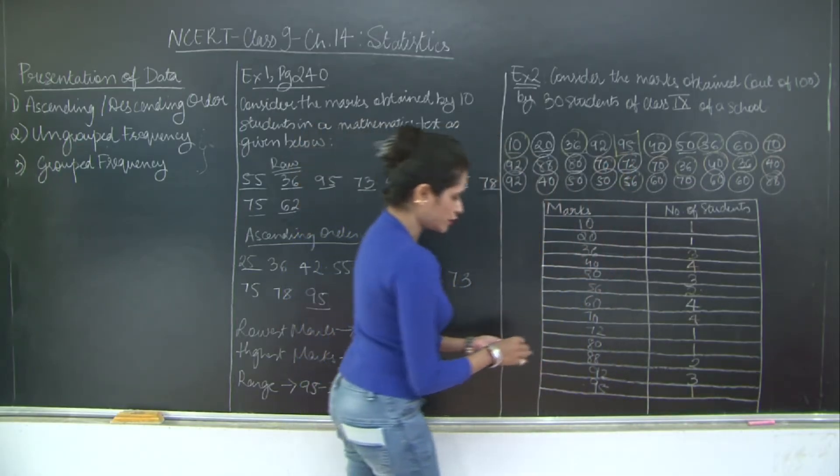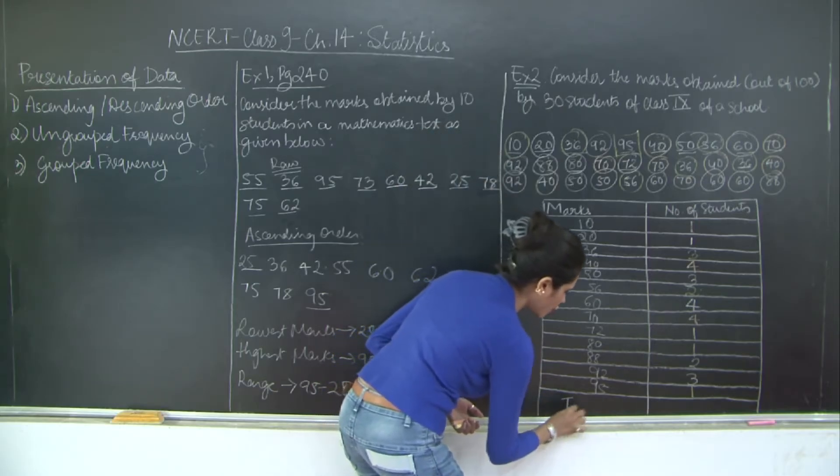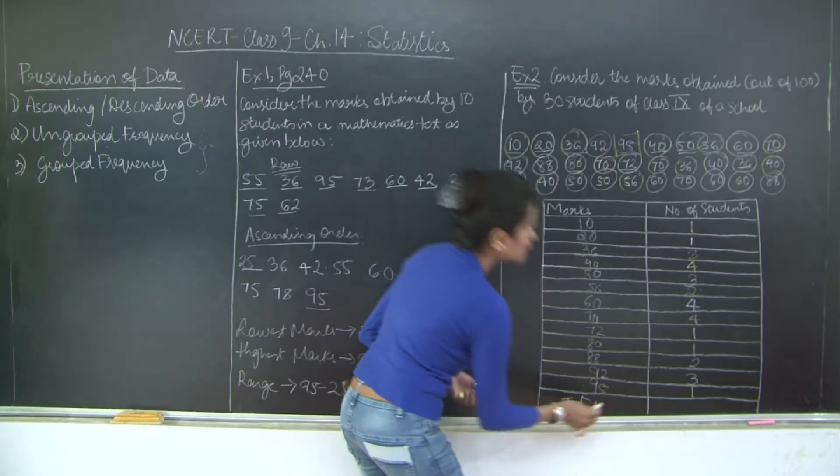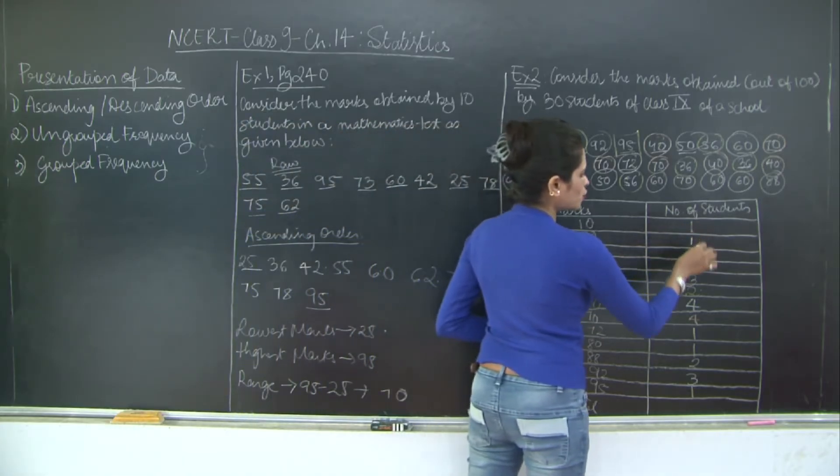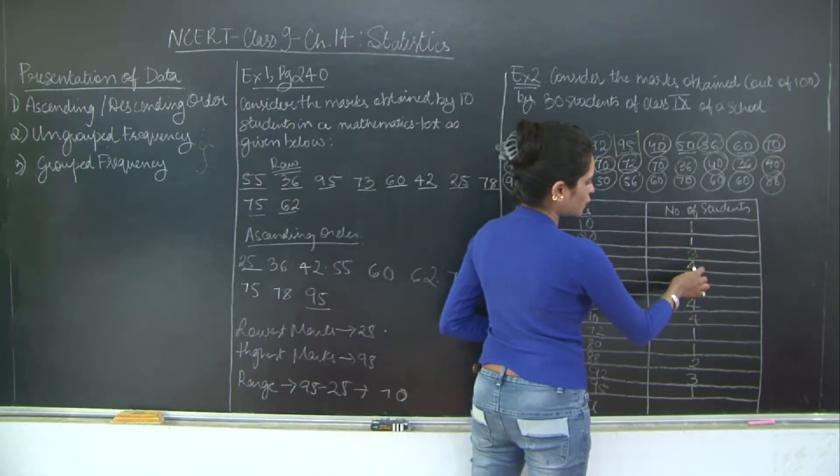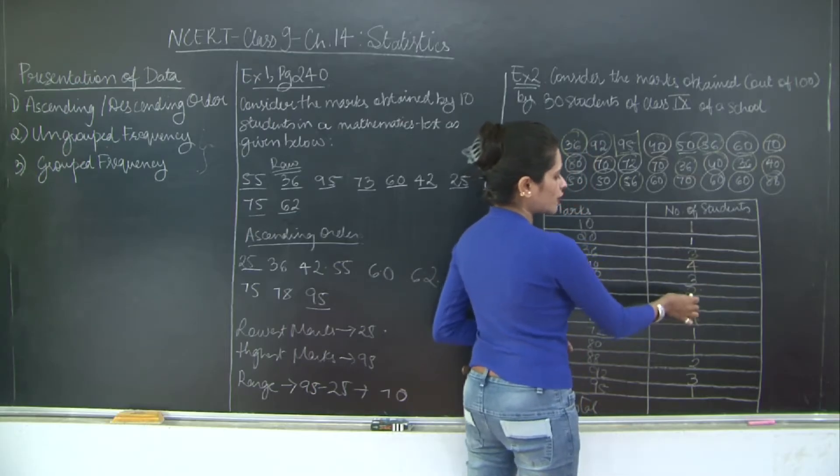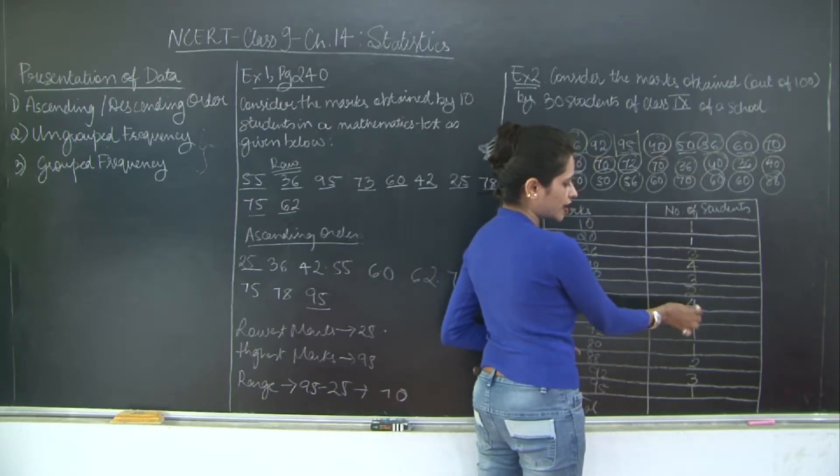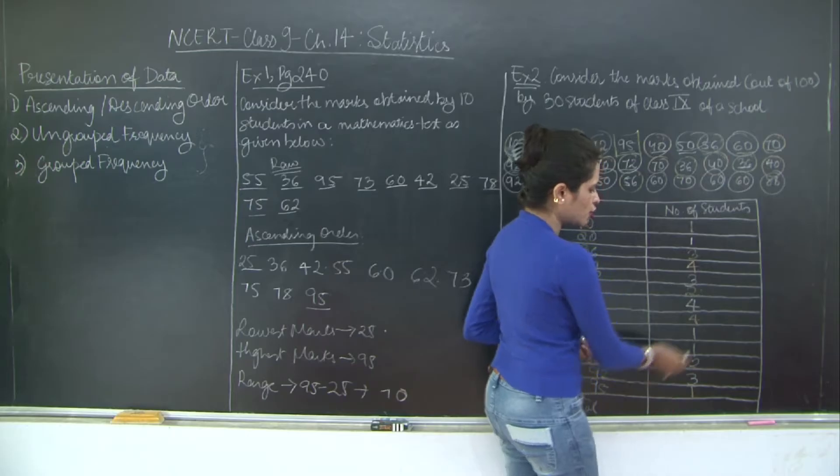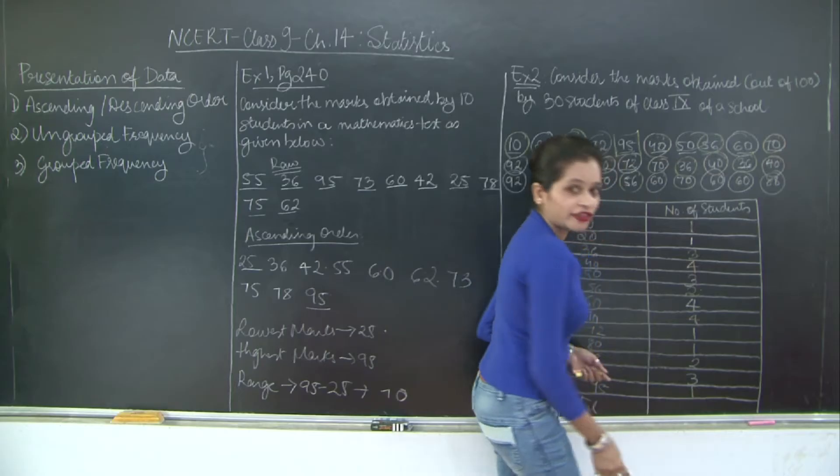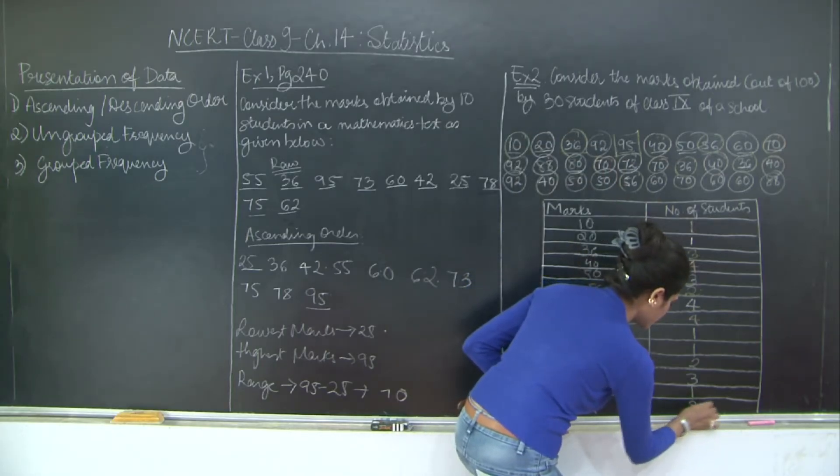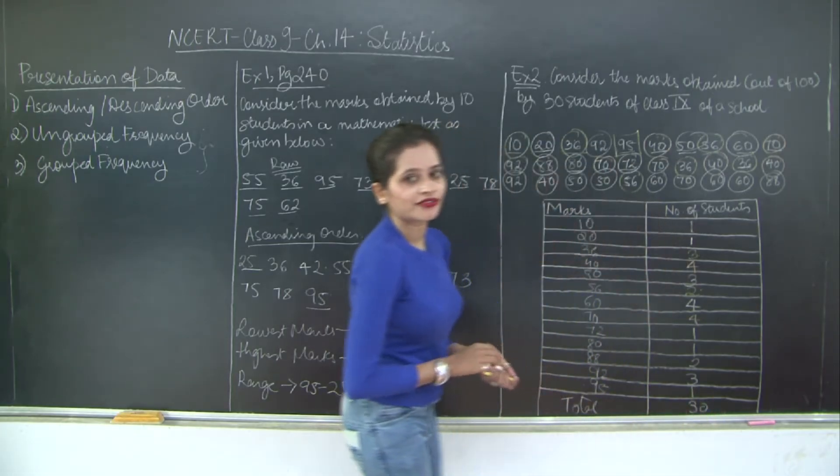So now I'm going to write down the total to ensure that the number of students is what that's given whether it's 30. So let's count 1, 2, 2 plus 3 is 5, 5 plus 4 is 9, 9 plus 3 is 12, 12 plus 2 is 14, 14 plus 4 is 18, 18 plus 4 is 22, 23, 24, 26, 29 and plus 1 is 30. So this is the total number of records.